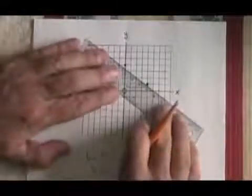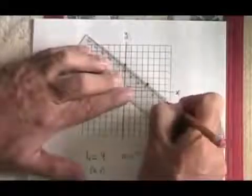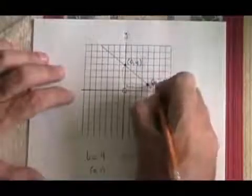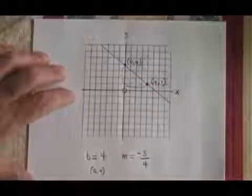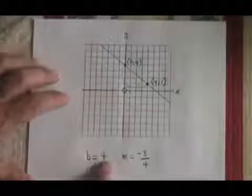I draw my line. I identify both points on the graph. And I'm finished. So being given a b should not complicate things at all.